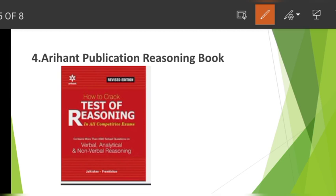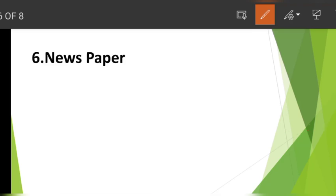Next, how to crack the test of reasoning — this is another important book for your preparation. Also, newspapers are very important. Reading the newspaper regularly is essential. You should also get a monthly magazine, as a newspaper magazine covers current affairs very well.